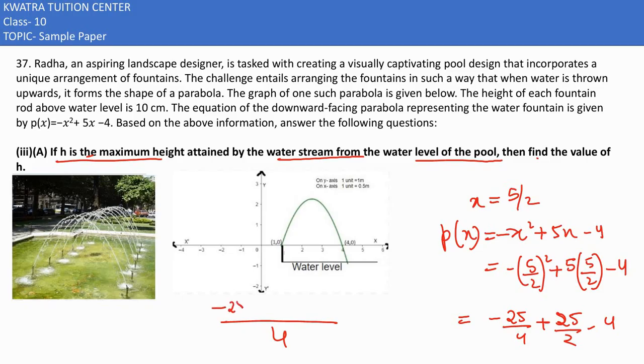So -25 plus 50 minus 16, which gives us 9. Therefore, 9/4, which equals 2.25 meters.